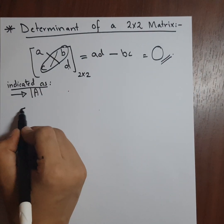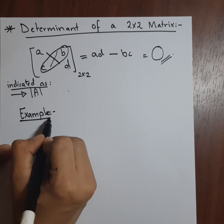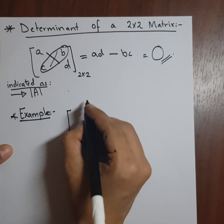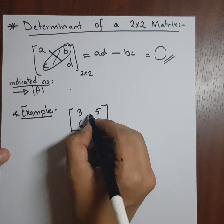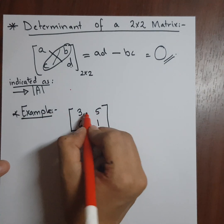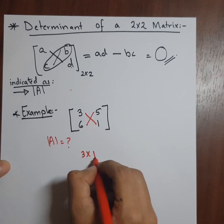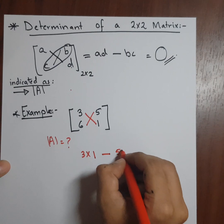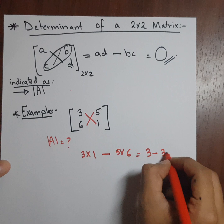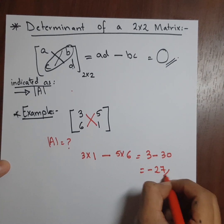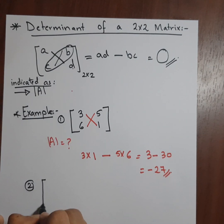Now let's take an example to understand this concept. For example, I have a matrix with elements 3, 5, 6, 1. I'm asked to find the determinant. So I'll cross multiply: 3 times 1 minus 5 times 6. This gives 3 minus 30, so my answer would be minus 27.